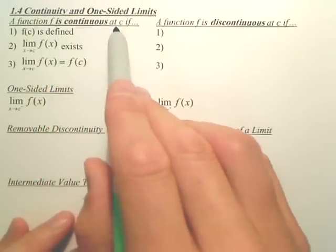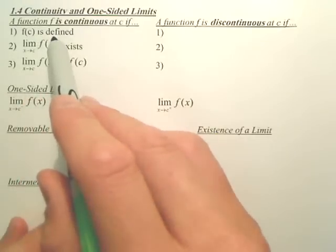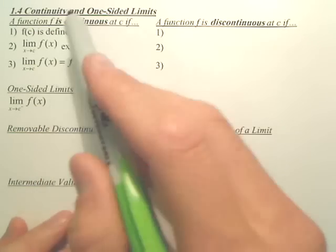A function is continuous at C if f of C is defined, meaning if you plug in C, you get an output. Obvious.